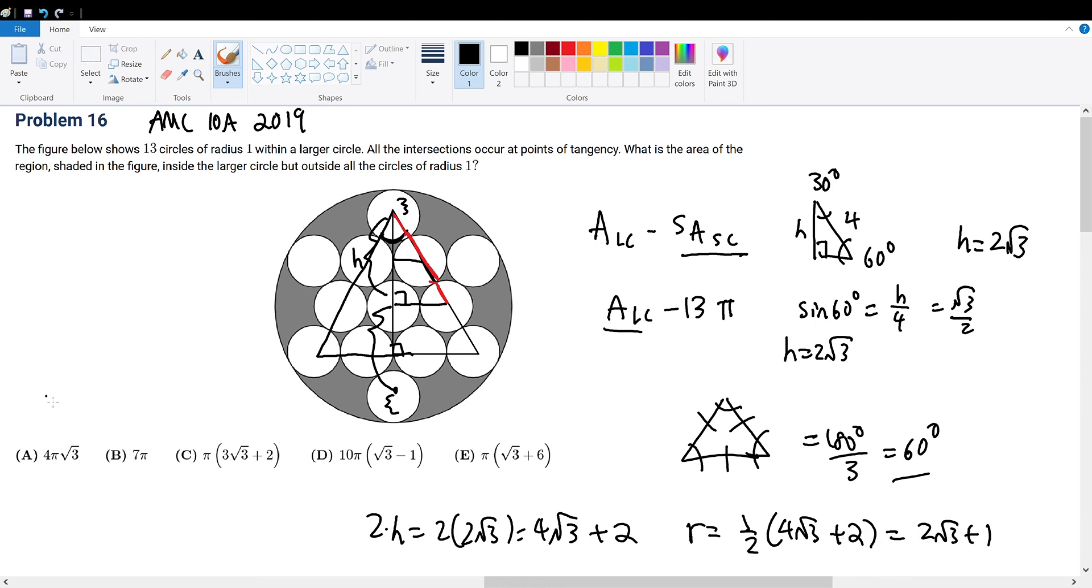And hence the area of the larger circle will be equal to r squared times pi. And then we can subtract this with 13 pi to get our solution. And I see here that we actually need to factor this entire thing. So let's actually factor out a pi to get 2 root 3 plus 1 squared minus 13.